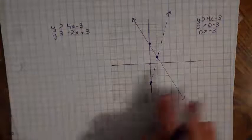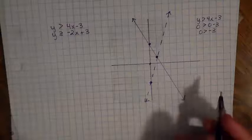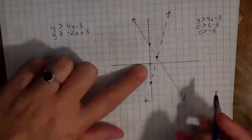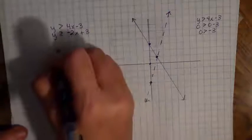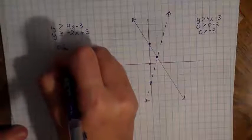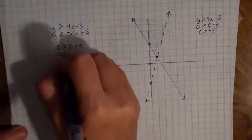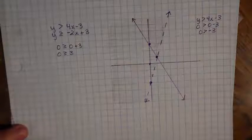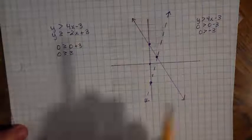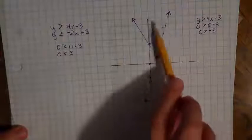I need to determine which side of that line to shade. I'll pick the point (0, 0) again because it's not on the second line. Plugging that in, I get 0 is greater than or equal to 3, and that is a false statement. So I don't shade this side of the line — I shade the other side.